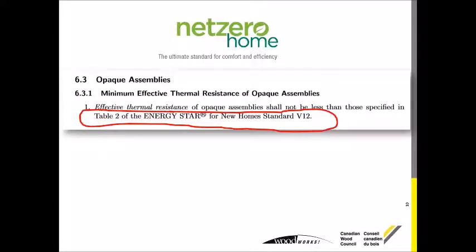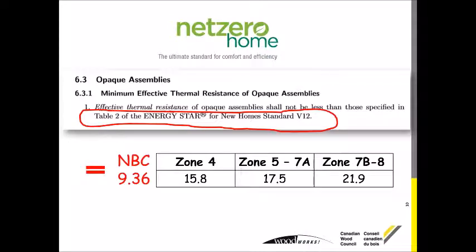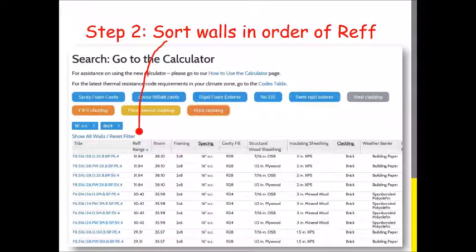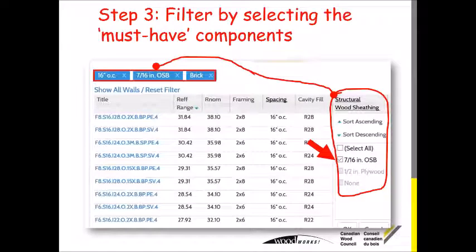That ENERGY STAR Table 2 requirement happens to be the same as the National Building Code 936. For example, a zone 7B or 8 wall would require about an R22 effective R-value. Step two is to go to the effective R-value range and select that — it can be sorted in increasing or decreasing order. Step three is to filter the must-haves. In this case, I decided I must have 7/16 OSB or half-inch plywood for structural rigidity to withstand wind and earthquake loads, and it's also a great backing for claddings.